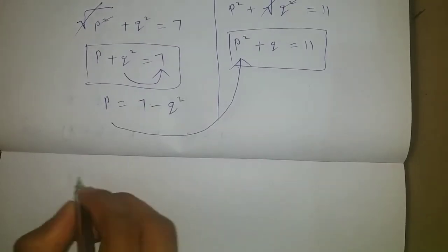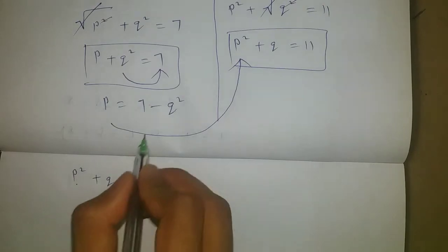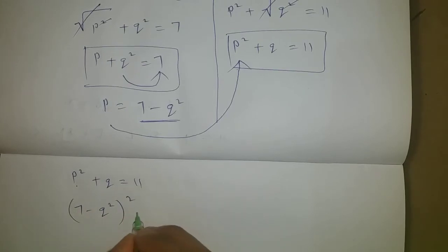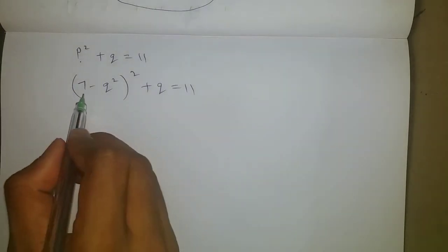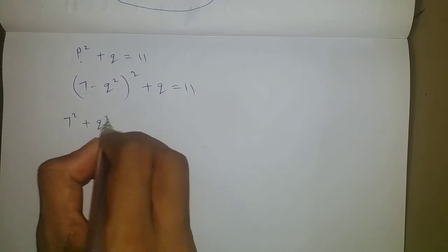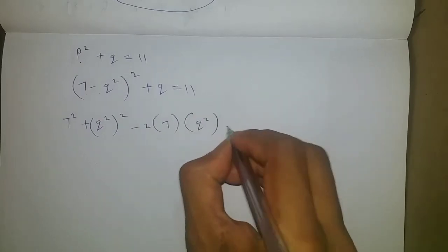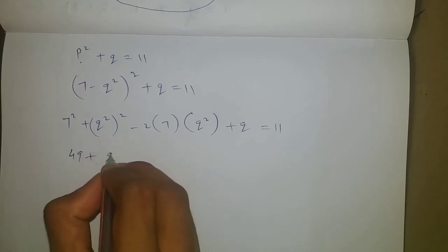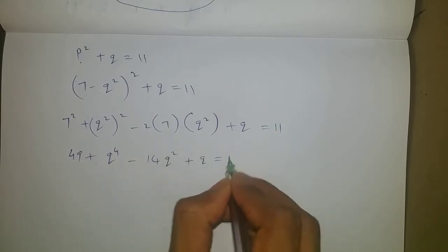We have p² + q = 11. Substituting p = 7 - q², we get (7 - q²)² + q = 11. Expanding using the (a - b)² = a² + b² - 2ab formula, we get 49 + q⁴ - 14q² + q = 11.